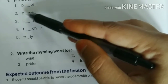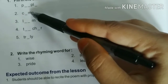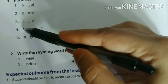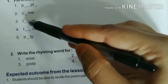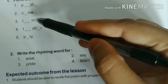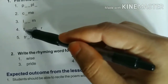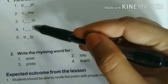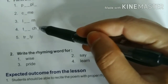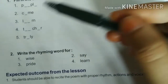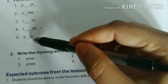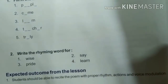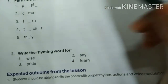Next, 'come' — C, O, M, E — come. Next can be 'teacher' — T, E, A, C, H, E, R — teacher. Next can be 'truly' — T, R, U, L, Y — truly. So this way place the vowels properly and say the word correctly.